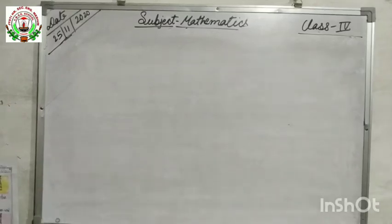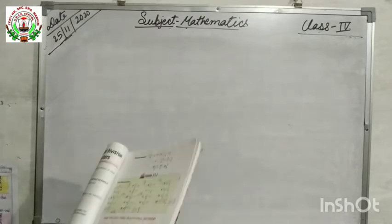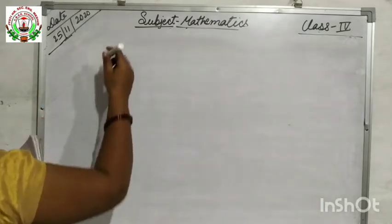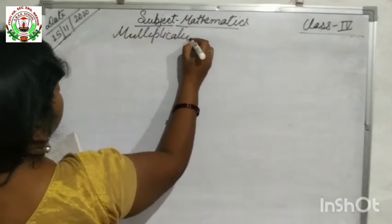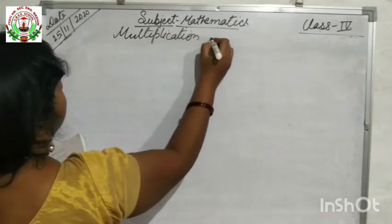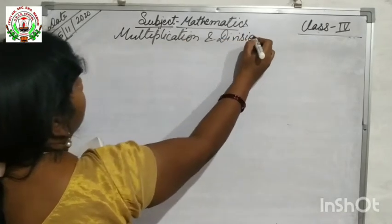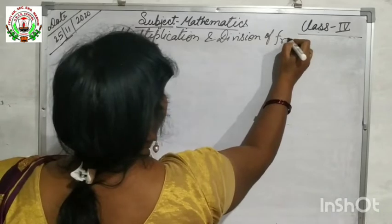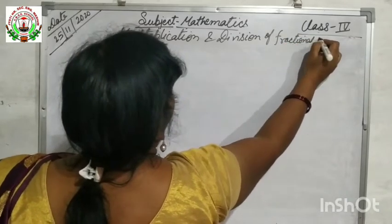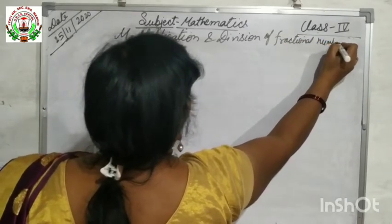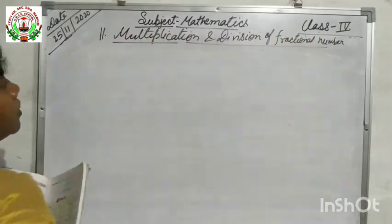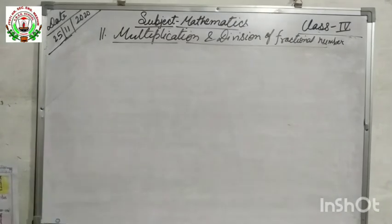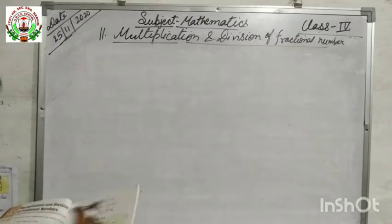Good morning children. Today we will start multiplication and division of fractional numbers. This is your chapter 11. In previous class, in chapter 10, we learned addition and subtraction of fractional numbers. Now it is multiplication.